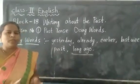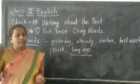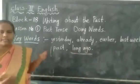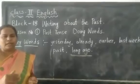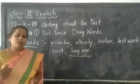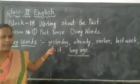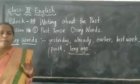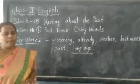So today we are going to learn about the words which are used in past tense. So let us see: 'yesterday' means it has gone. For example, today is Tuesday. What was yesterday? Monday. So Monday is past, it has gone. So we will use 'yesterday' and 'already.' These are the words we use for past. When the action is completed, that time we use past tense.